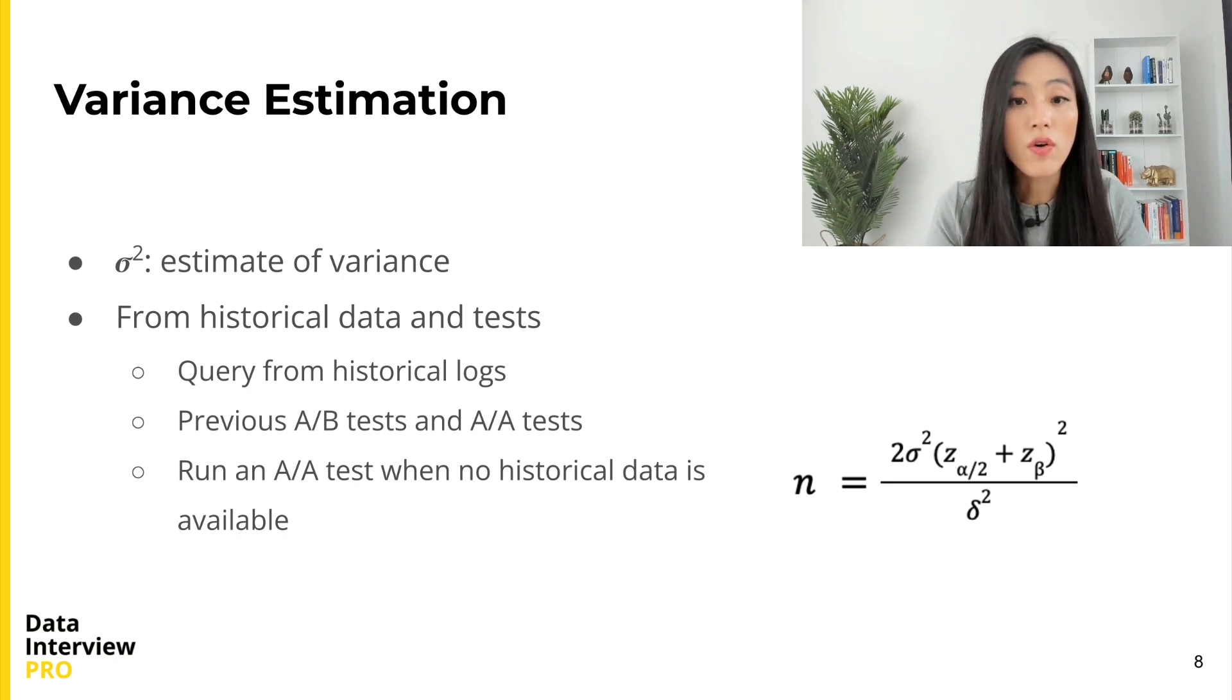It can be obtained from historical data. Generally speaking, companies should have historical data such as system logs or user behavior data for data scientists to query to estimate variance. For companies that have done some A/B tests before, we can estimate the variance from previous A/B tests and A/A tests.